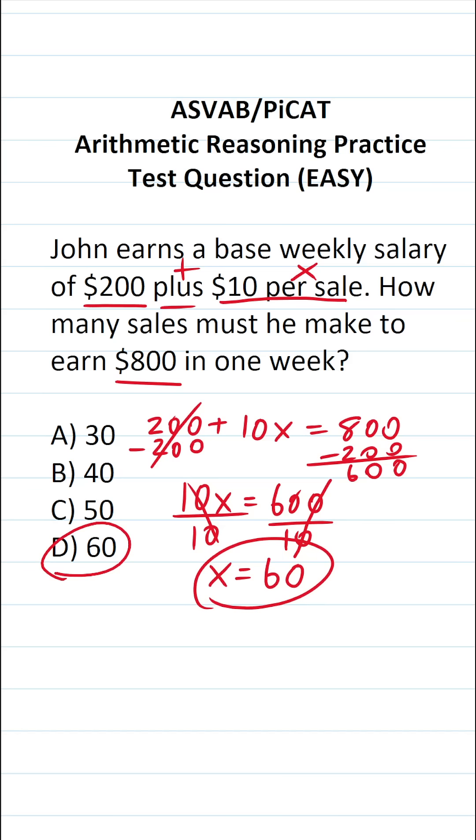So in other words, John has to make 60 sales per week in order to have a weekly income of $800. So this one is D.